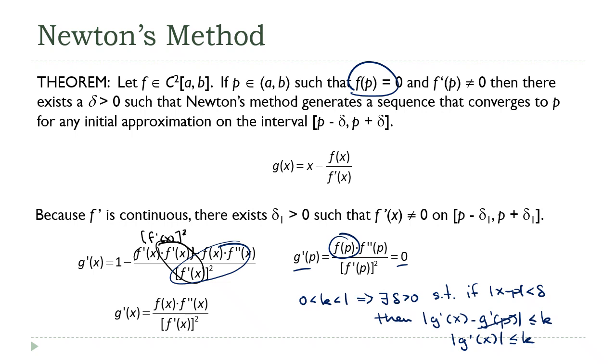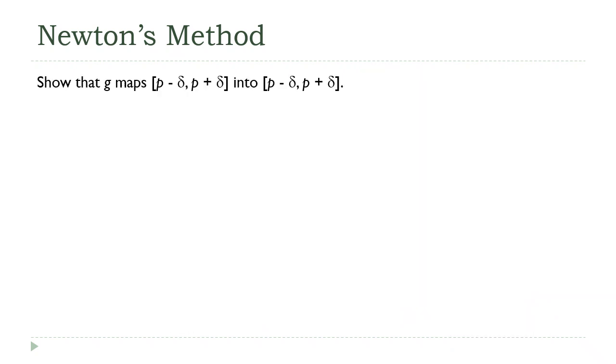So that's half of it. All that's left to be shown is the box criteria. We need to show that if x is on this interval, then g(x) is also on this interval. In other words, g maps that interval into itself.